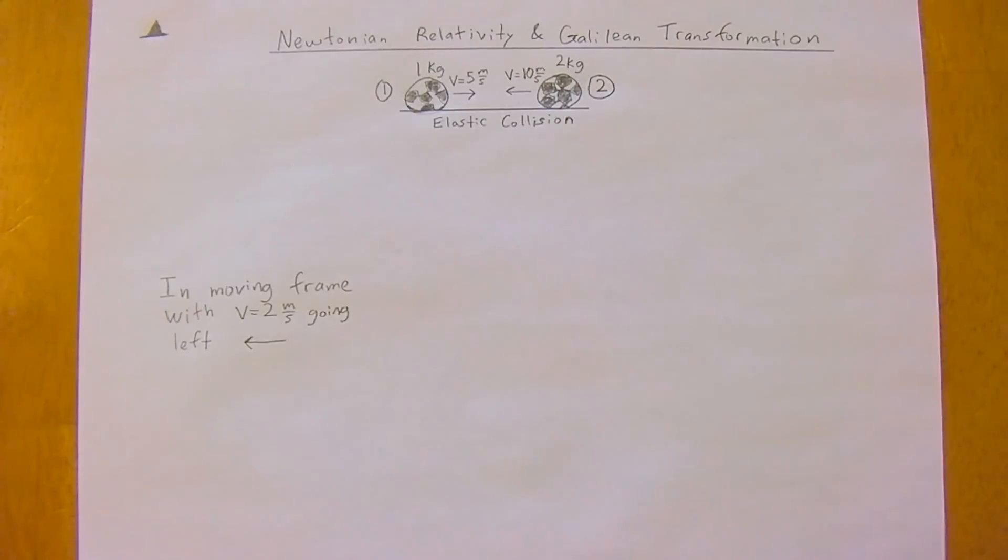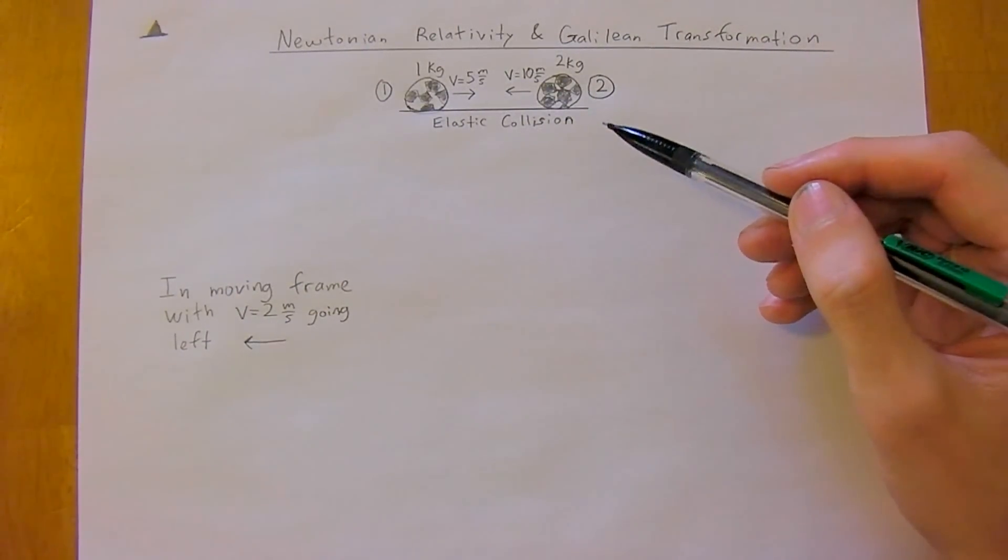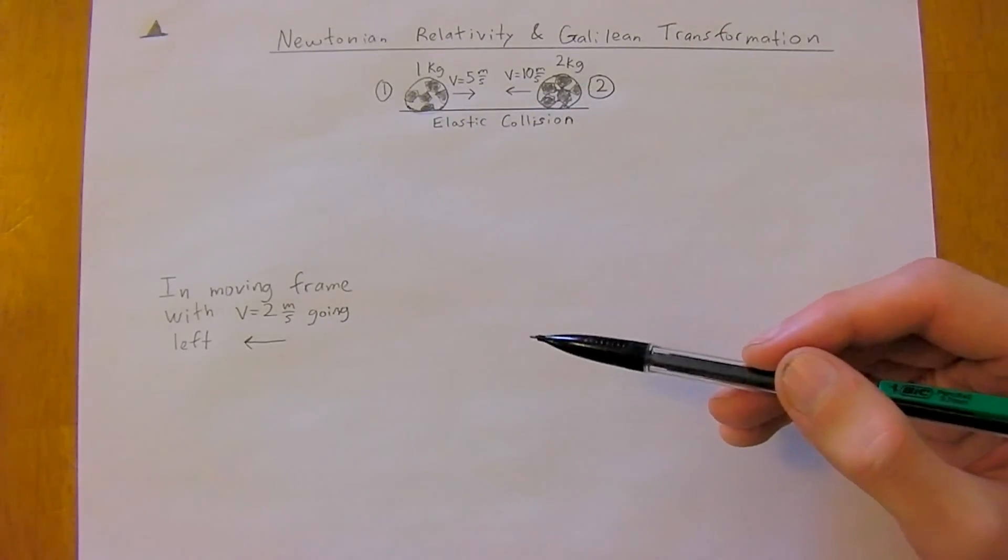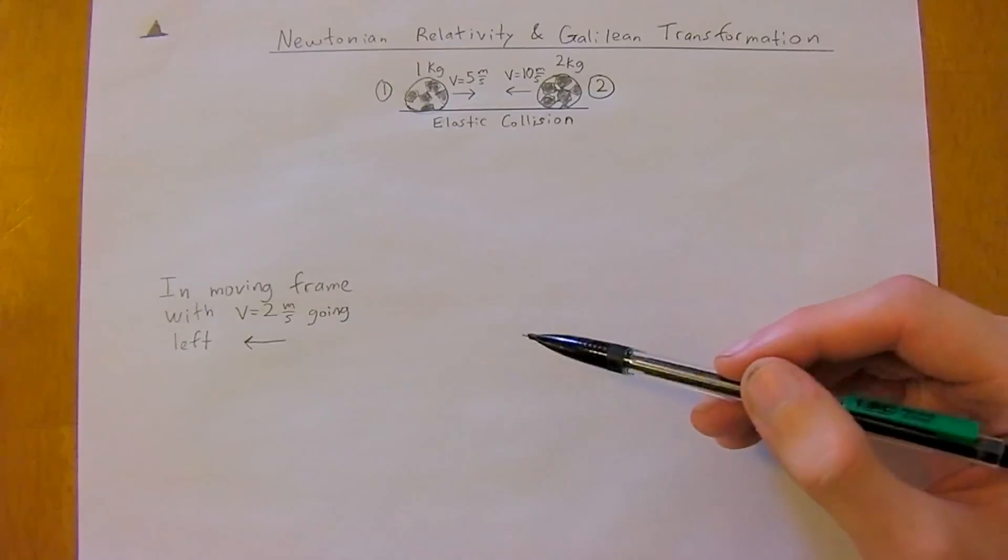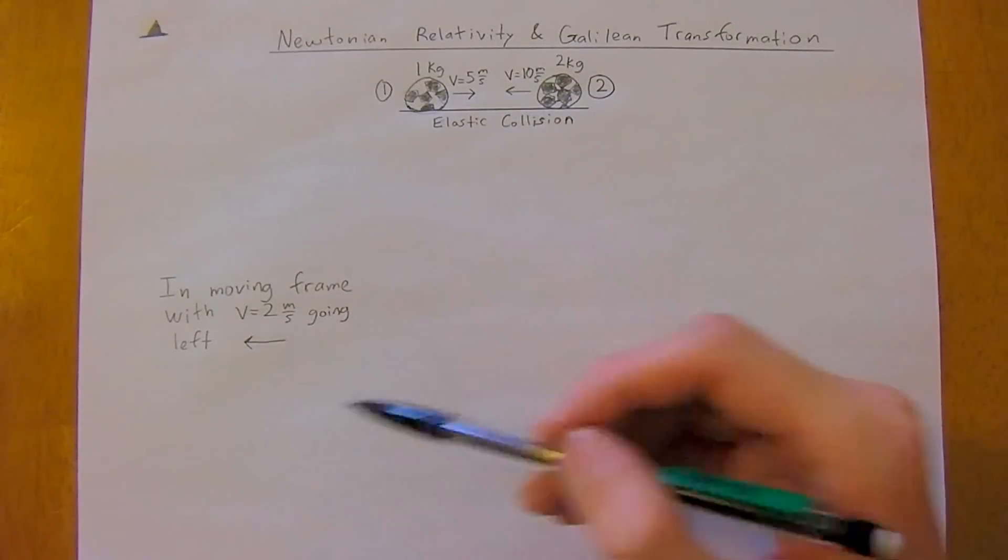Newtonian relativity and Galilean transformations are all about working in two different reference frames, or some people call the laboratory frame of reference. Your first frame is usually a stationary one, as in this case, and then your second frame you're going to need to switch to is one which is moving relative to that. So for example, with a velocity of two meters per second going left.